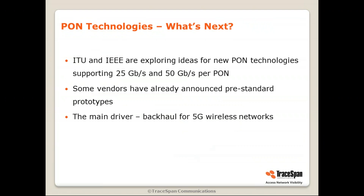A little bit about what's beyond NGPON2: the ITU and IEEE are exploring ideas for new PON technologies that support 25 Gbps and 50 Gbps per PON on a single wavelength, and some vendors have already announced pre-standard prototypes. The main driver for these higher bandwidths is backhaul for 5G wireless networks — a much stronger driver than business or residential customer requirements, because XGS-PON bandwidth is probably more than enough for the coming years. But a 5G base station serving many customers requires much higher bandwidth backhaul, and that's the driver.